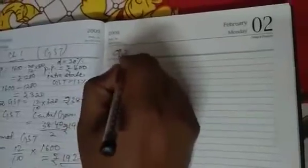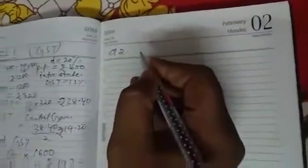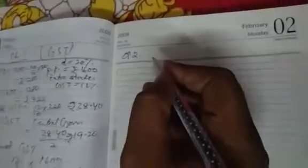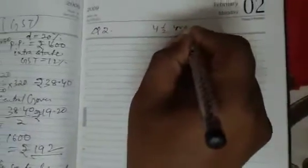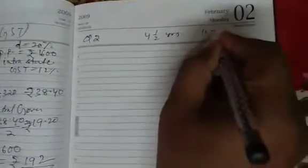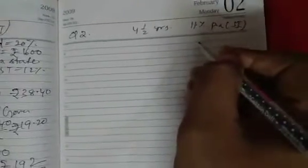Now we will take a question from Chapter 2, that is from Banking. A question from Banking. Mr. Chaturvedi has a recurring deposit account in SBI for 4 and half years at 11% per annum simple interest, and he gets Rs. 101418.75 at the time of maturity.